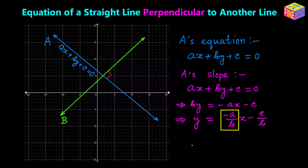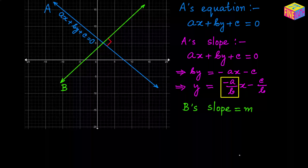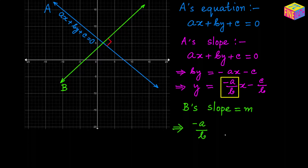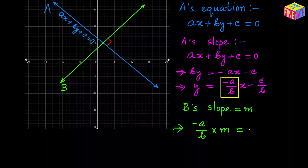Let's assume that the slope of straight line B is M. Because lines A and B are perpendicular to each other, the product of their slopes equals negative 1. I have already created a separate video on this topic — the link is in the description. So the product of slopes: negative A over B times M equals negative 1.